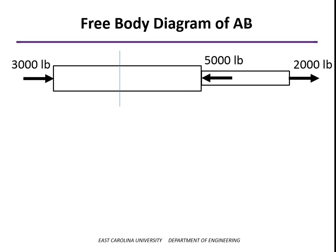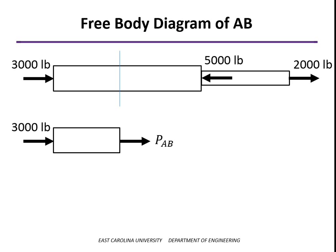Now if I want to cut the bar between A and B — and this is a concept from statics that if this entire bar is in equilibrium, then any portion I isolate will be in equilibrium as well — on the cut face are the internal forces or stress resultants required for equilibrium. In this axial loaded case, there's an axial force, the stress resultant PAB. Notice I've drawn this as though it were in tension, although it's not in this case, so PAB is minus 3,000 pounds. By always drawing them as though they're in tension, the signs take care of themselves.